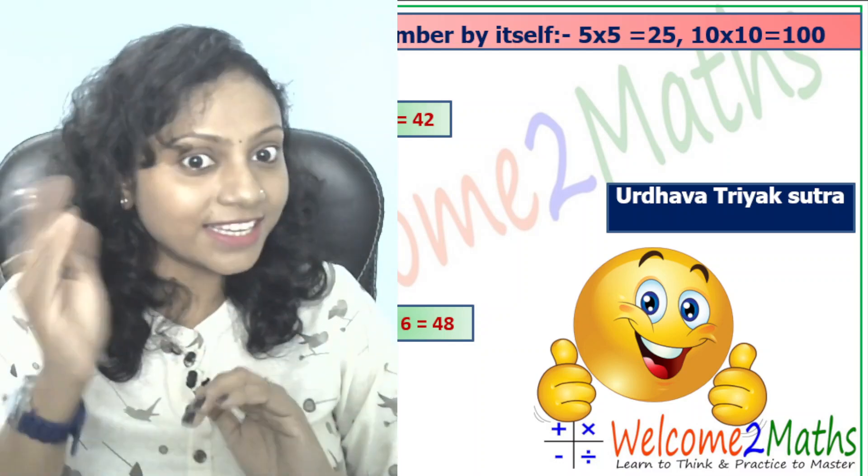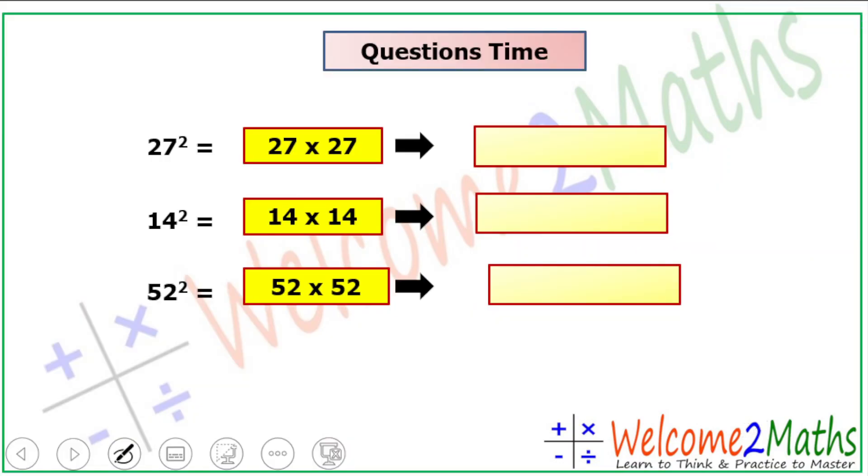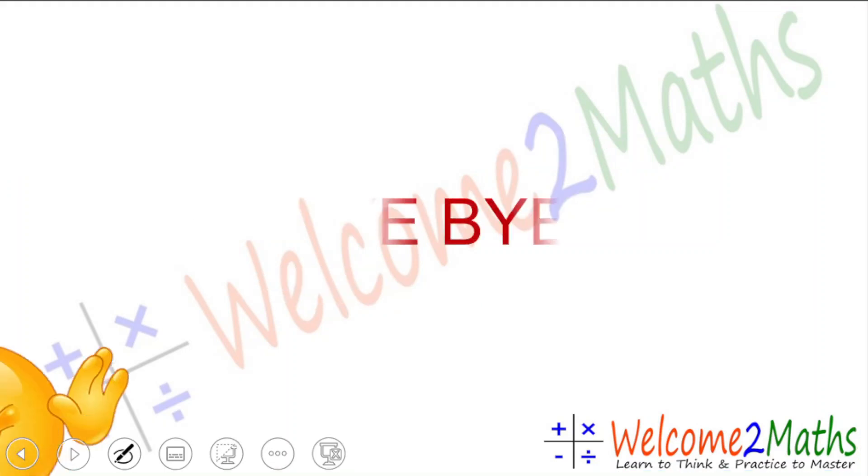These are the three questions: 27 squared, 14 squared, and 32 squared. Find these squares in the same way and give me the answers. Meet you again with a new class. Till then, take care of yourself and bye.